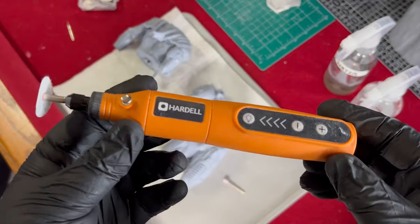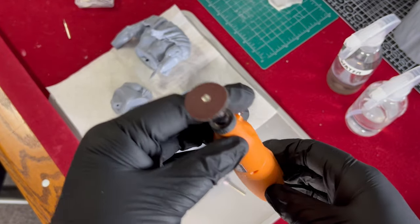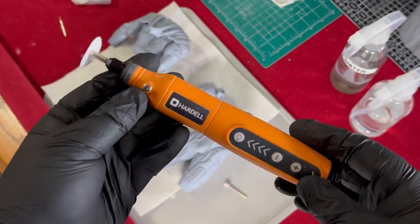So right off the bat, one of the tools I would suggest investing in is a small Dremel style sander. I found this one on Amazon for $25 and it's been a huge help for speeding up the entire sanding process.